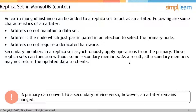Arbiters do not require dedicated hardware and can work as a simple command prompt instance. Secondary members in a replica set asynchronously apply operations from the primary — it is a lazy write.